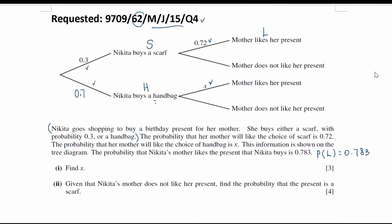Based on the info given so far, we are trying to find out the probability that her mother likes Nikita's present, which equals 0.783. In order to use the tree diagram to find the probability that her mother likes it, it would be like this. First, Nikita buys a scarf and her mother likes it, or Nikita buys a handbag and her mother likes it. That is the probability we need to consider.